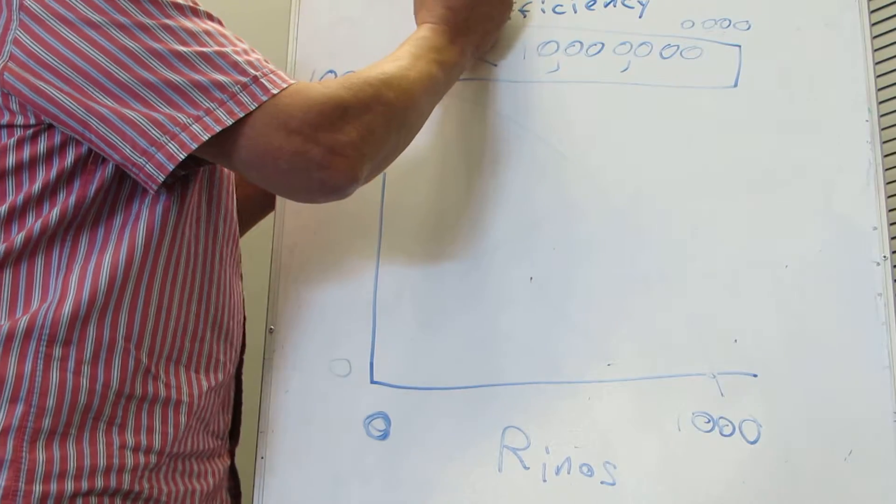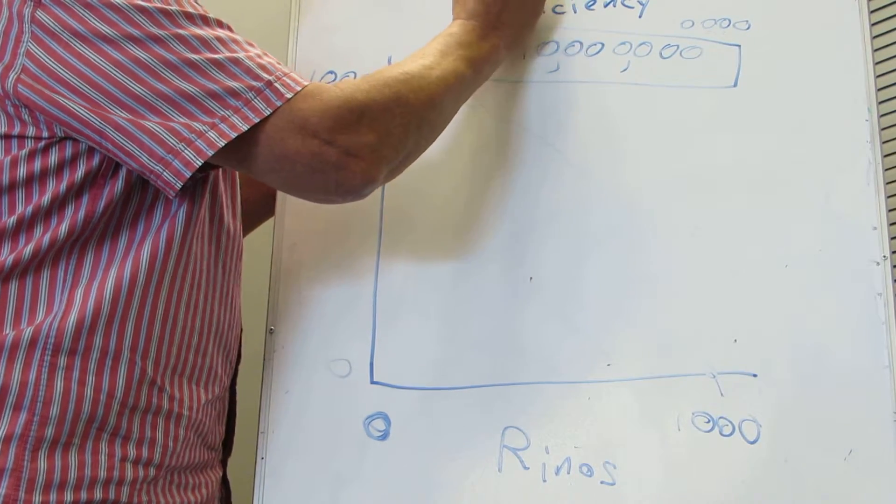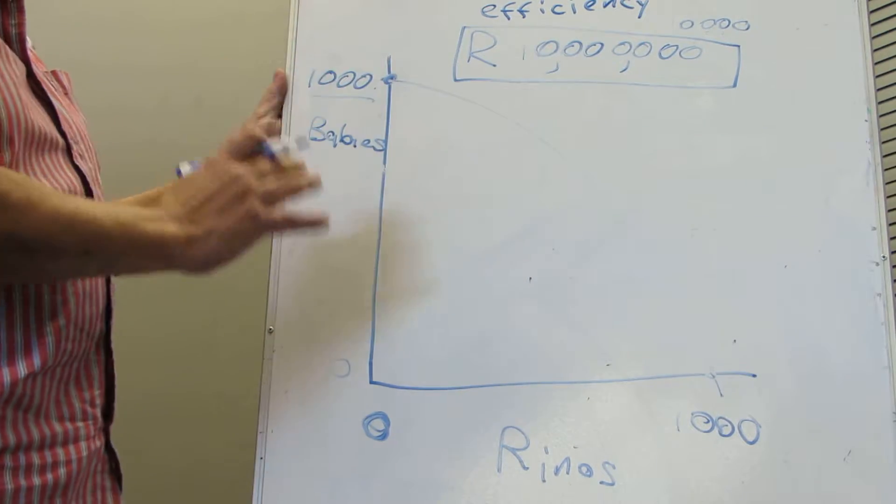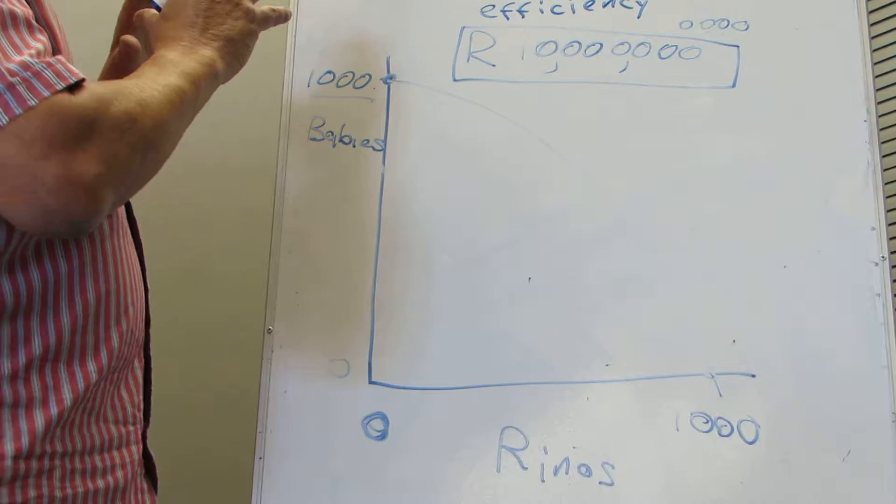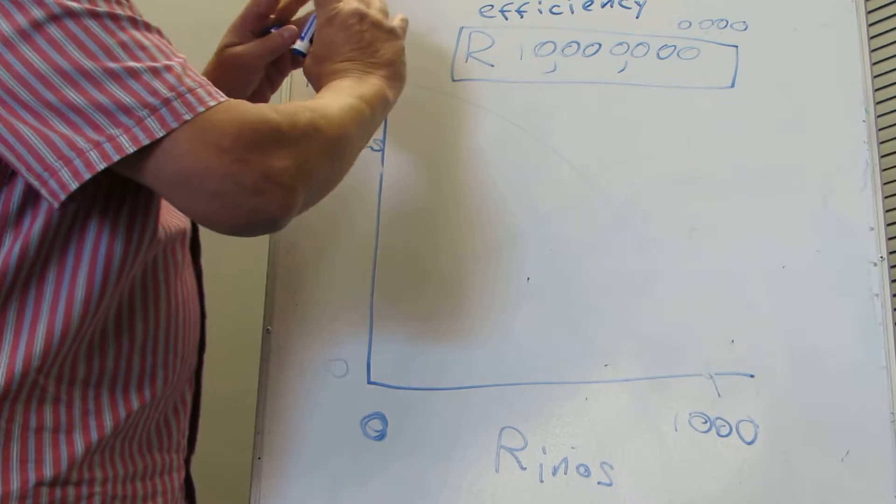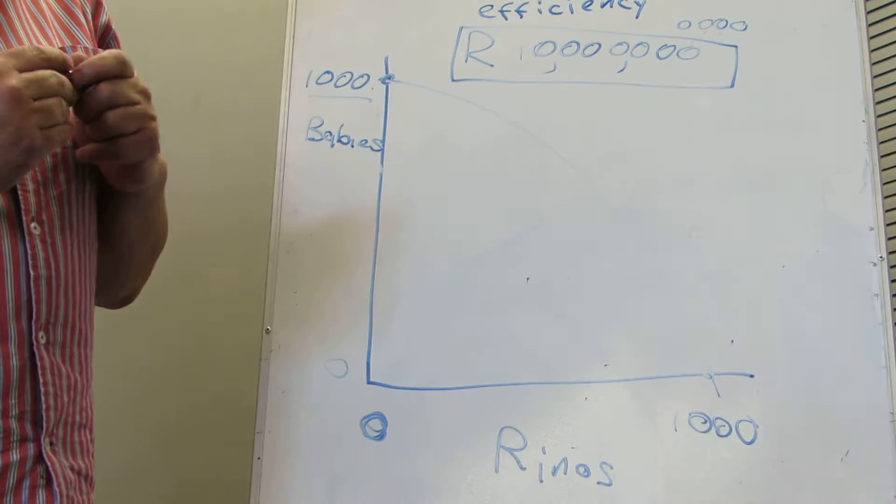So what we've got here is the PPF, the Production Possibilities Frontier, or the Production Possibilities Curve that illustrates the choice between achieving one objective in relation to achieving another objective given a limited resource.